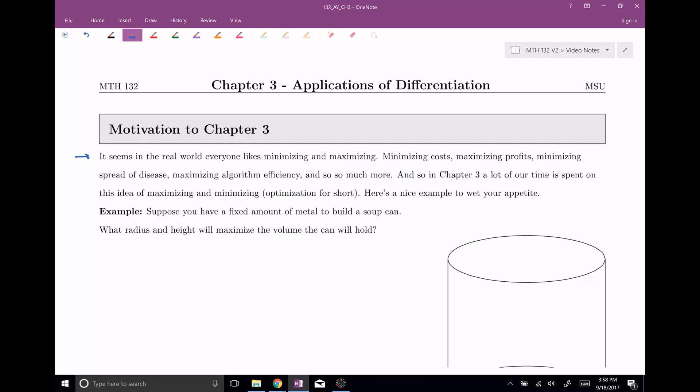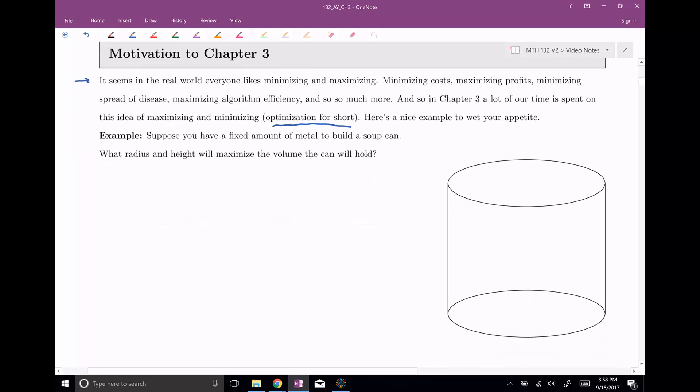And eventually we want to get to real world problems, so this is going to be the optimization section here. And we're going to kind of build up to this. Here's a problem maybe just to whet your appetite. Suppose that we have a fixed amount of metal. Someone says, okay, maybe you have two square feet of metal or something like this, it's tin, and I want to build a soup can.